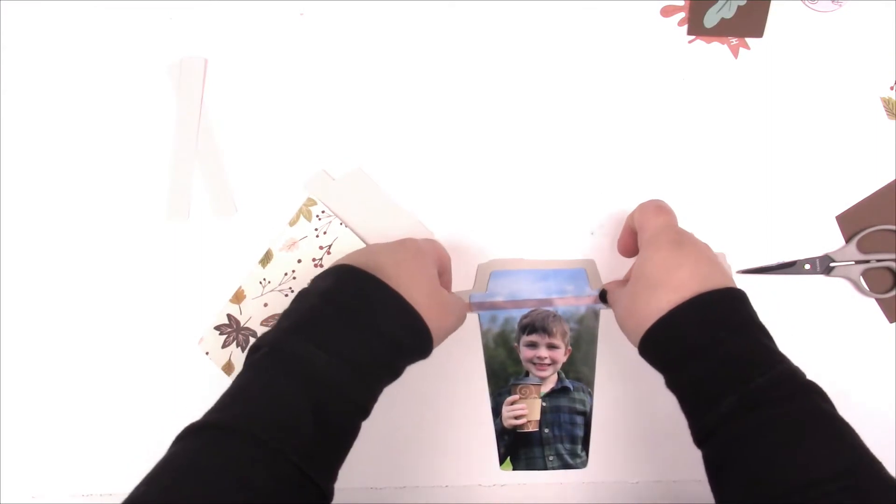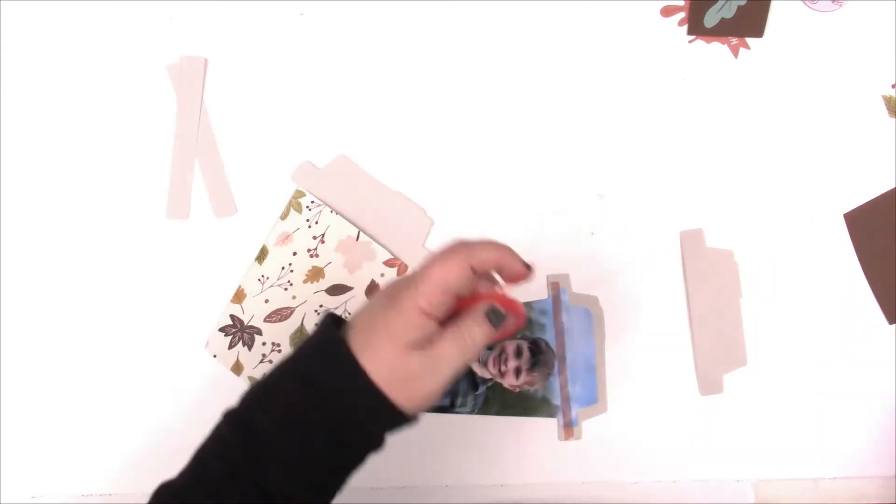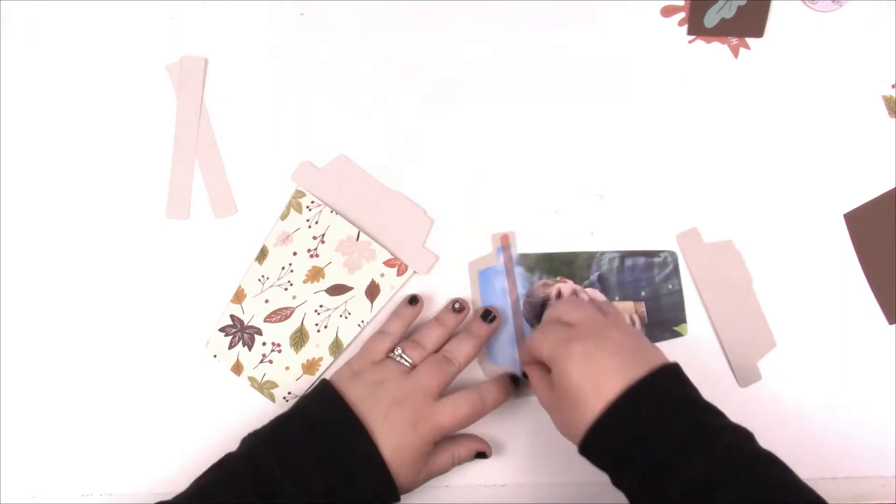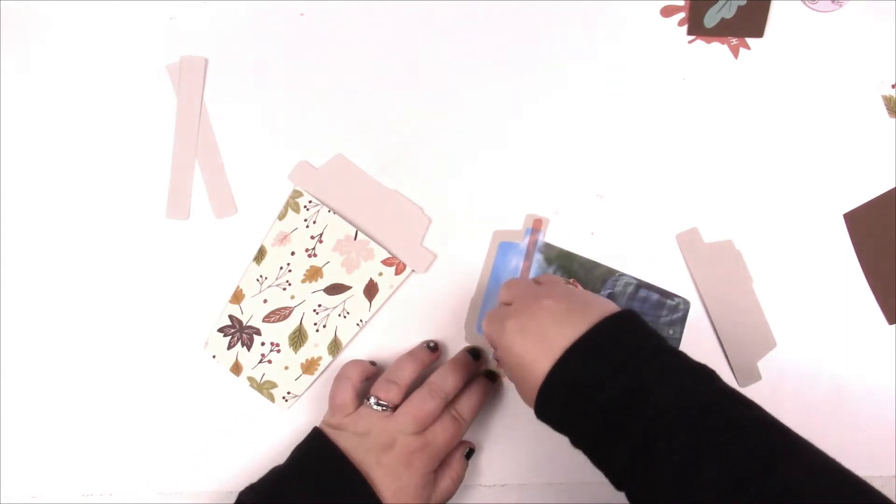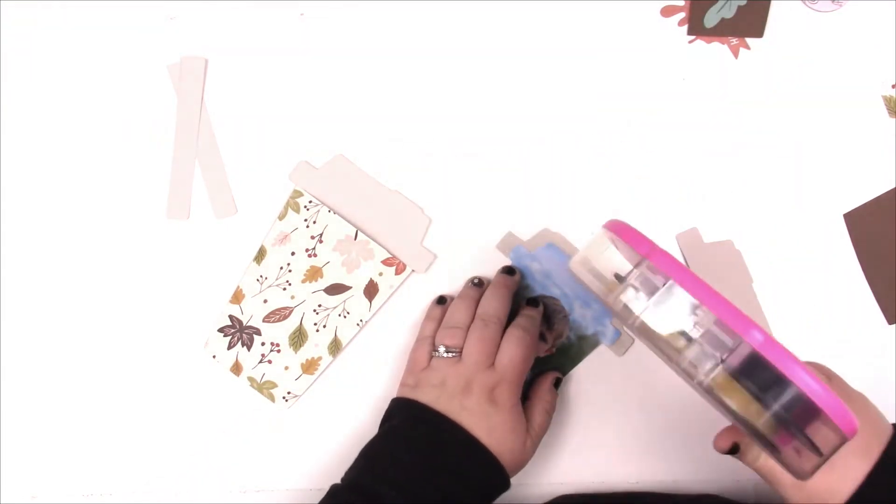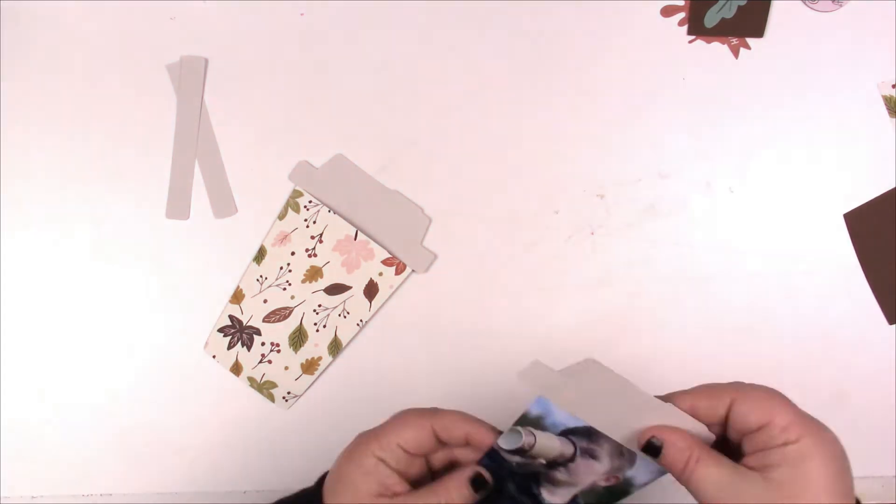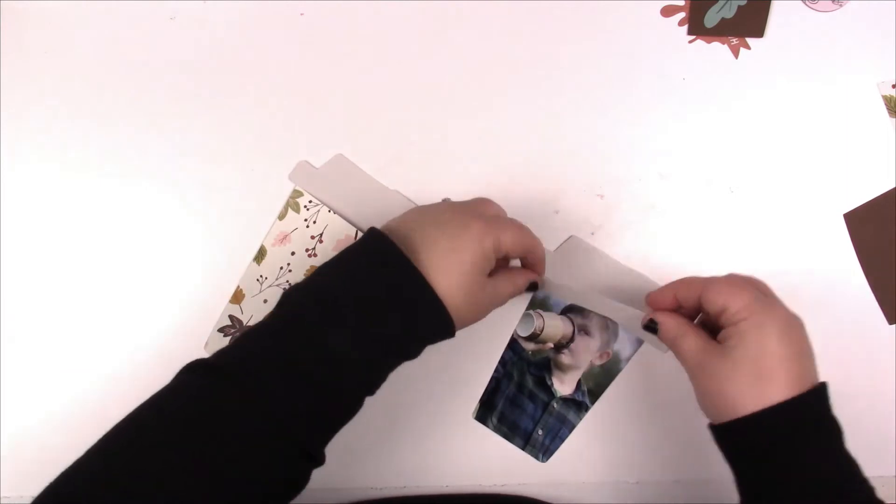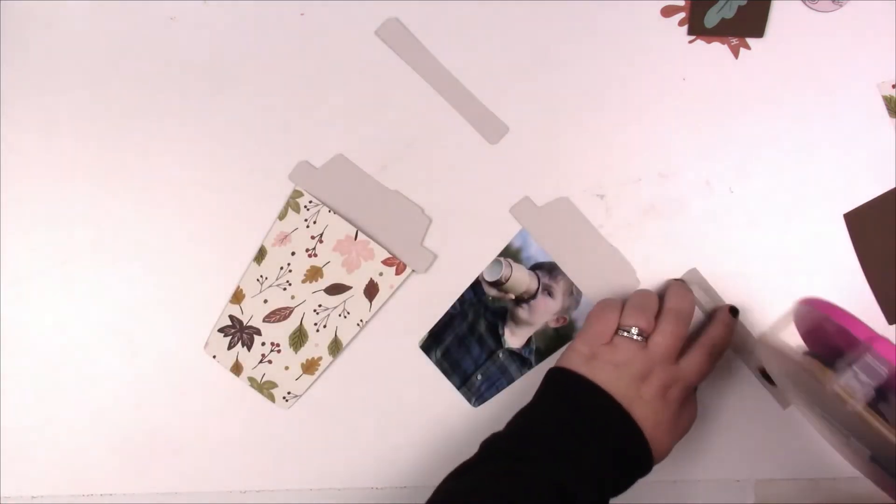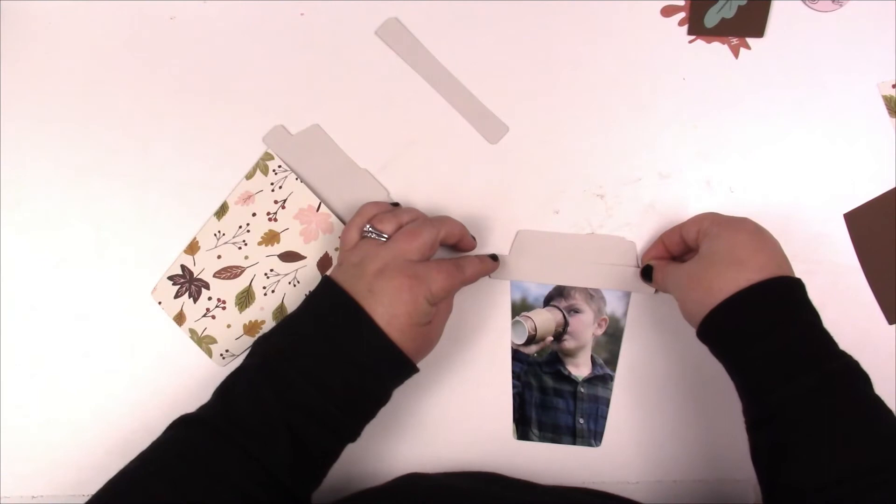You're going to come back in and add the lip to it to give it a little dimension. Off camera after I finished this, I actually ended up going back and using one of my markers and outlining the edges of the lid in gray just to define it a little bit more.